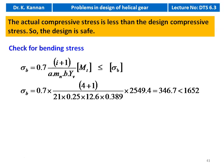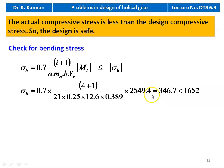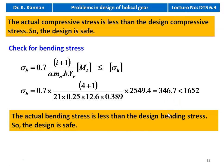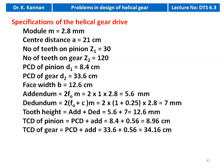Checking bending stress: σB = 0.7 × (i+1) / (A × mn × B × YV) × MT_design = 0.7 × 5 / (21 × 0.25 × 12.6 × 0.389) × 2549.4 = 346.7 kgf/cm², which is less than the design bending stress of 2385 kgf/cm². The actual bending stress is less than the design bending stress, so the design is safe.